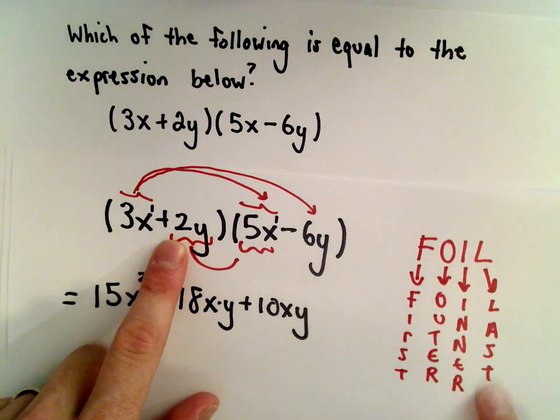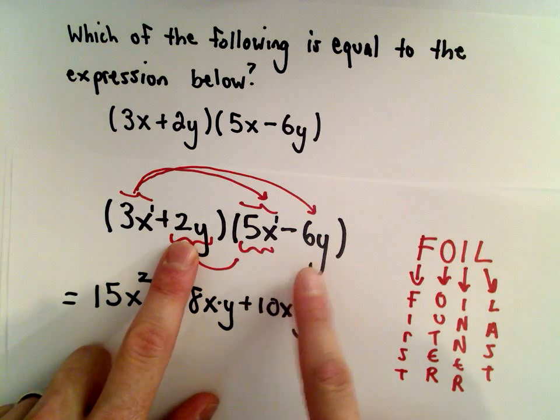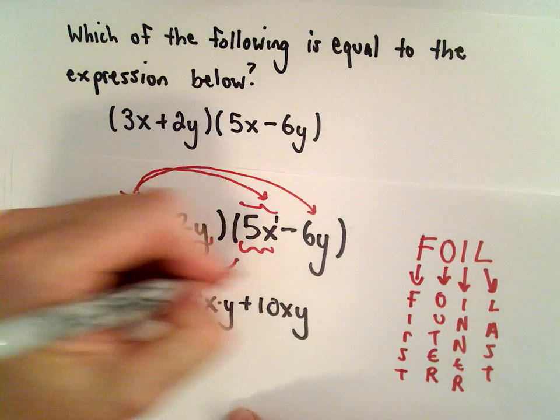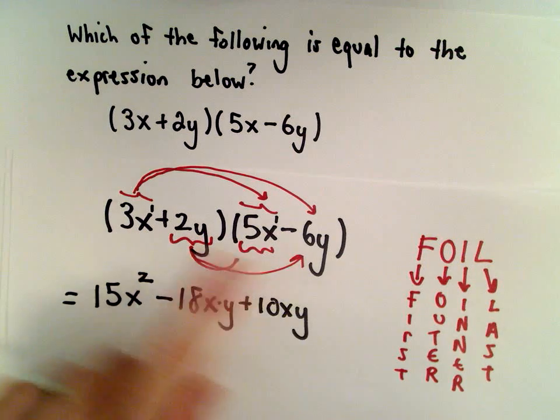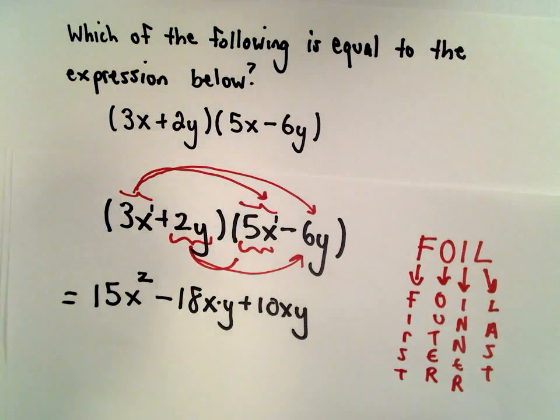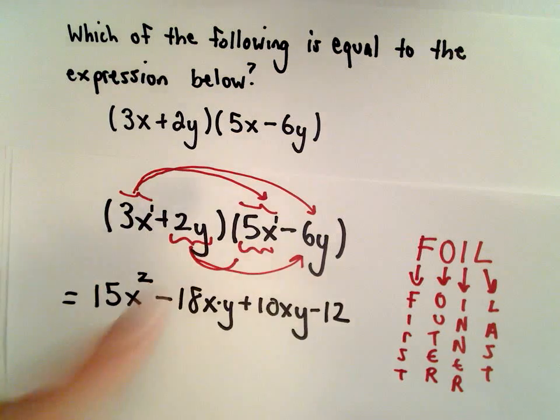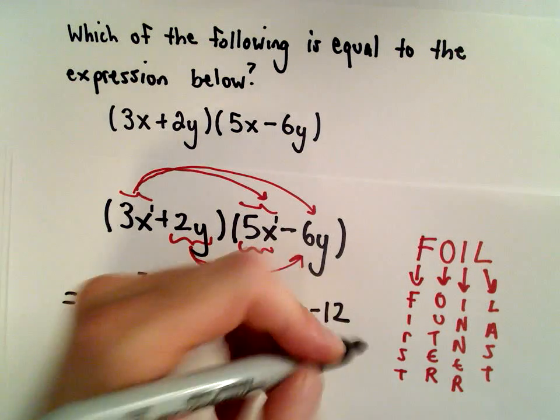L stands for last, so multiply the last term in each set of parentheses. 2 multiplied by negative 6 is negative 12, and y multiplied by y gives us negative 12y squared.